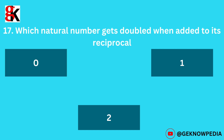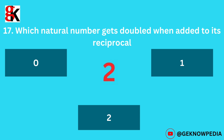Seventeenth question. Which natural number gets doubled when added to its reciprocal? Options: zero, one, two. The correct answer is 1.